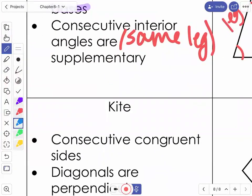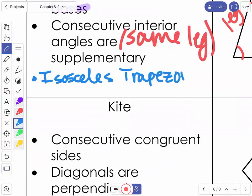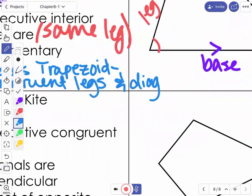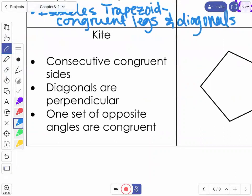Now, one special property here. If the trapezoid is isosceles, it will have congruent legs and also congruent diagonals.